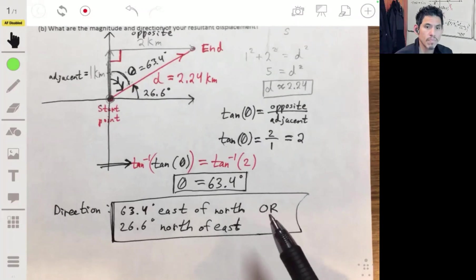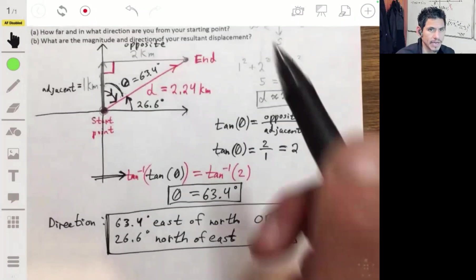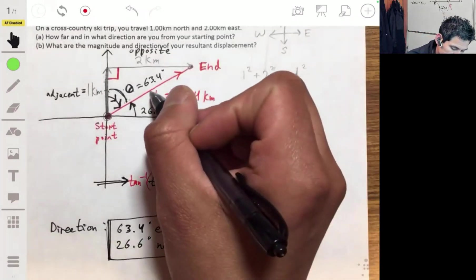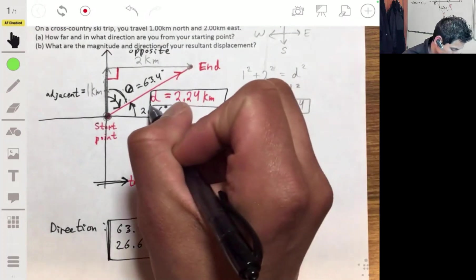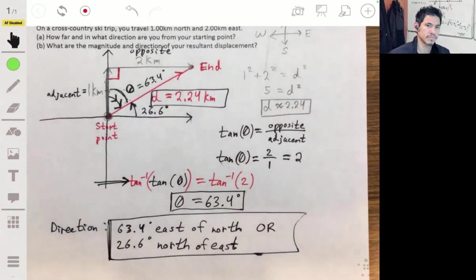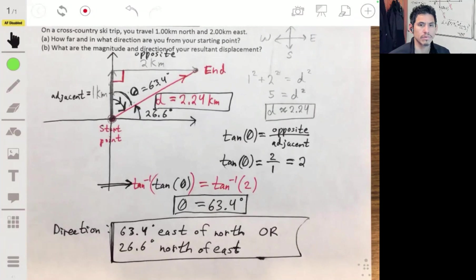All right. So then the magnitude is just 2.24 kilometers. All right. So there you go. So I hope that helps.